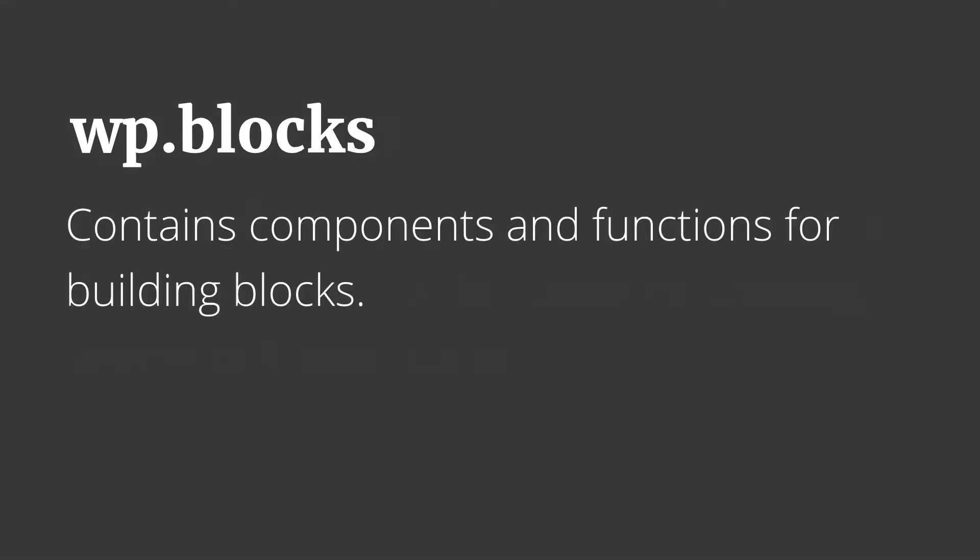Then we have wp-blocks. This contains components and functions for building blocks. For example, our registerBlockType function is going to be stored in here, as well as different components that we could use to construct our own blocks. We also find in this library a directory with all of the core blocks that ship with Gutenberg itself, so you could go in and see how they work and copy code or mimic functionality of what you get out of the box.